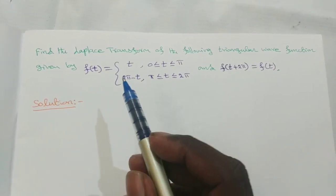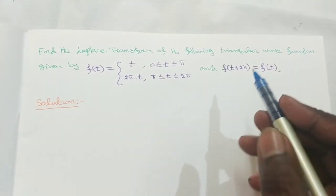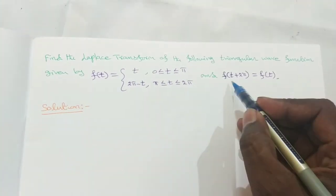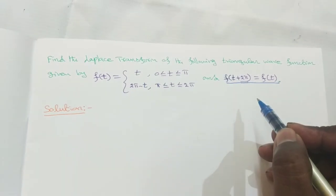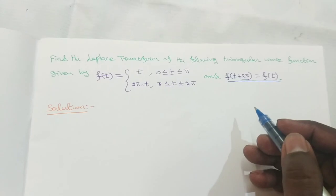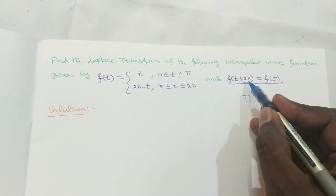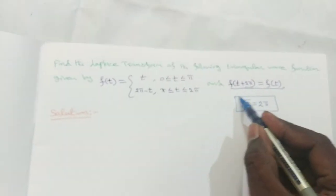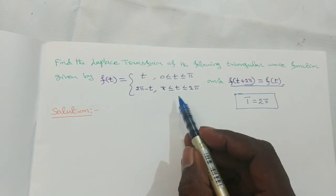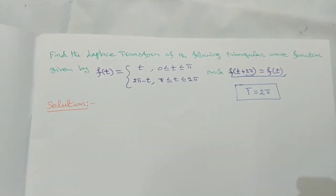This function is a periodic function with period 2π. So the period, which I am going to denote as capital T, is equal to 2π.